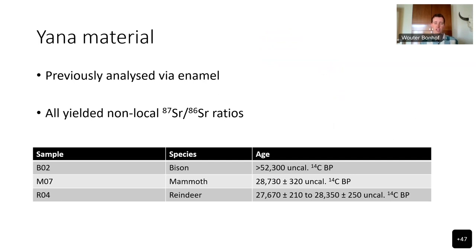Previously, I analyzed several animals from Yana — a bison, a mammoth, and a reindeer selected to continue with for the dentine analysis. All of these individuals showed non-local strontium isotope ratios, making it excellent to test whether dentine could also yield these non-local ratios. However, radiocarbon dating revealed the bison is much older than the archaeology and returned an infinite radiocarbon date. The mammoth and reindeer do fall within the range of the archaeology at about 32,000 years old.